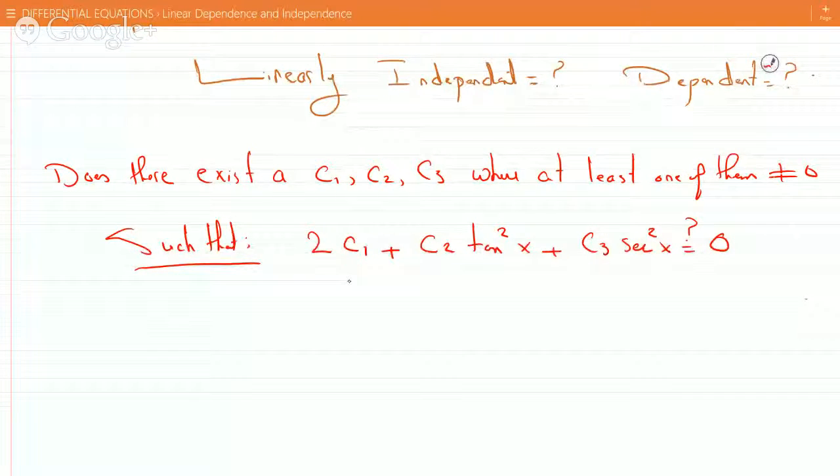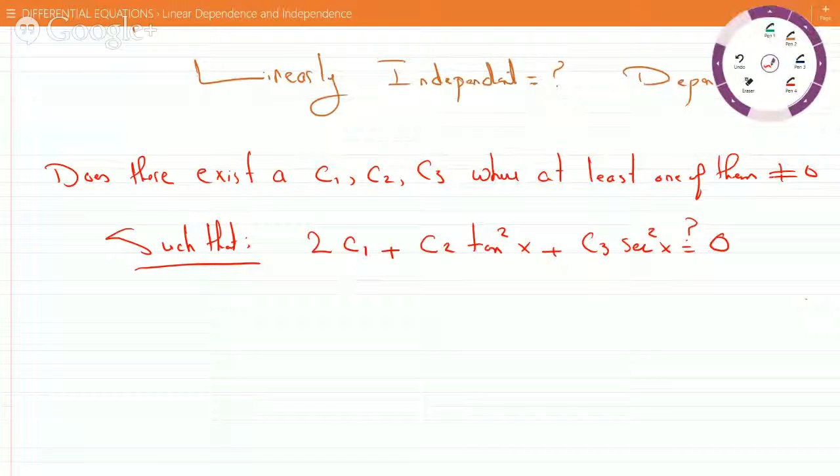So let's investigate this a little bit. Since there's a relationship between the tan squared and the secant squared, it would be a good idea to replace one of them.